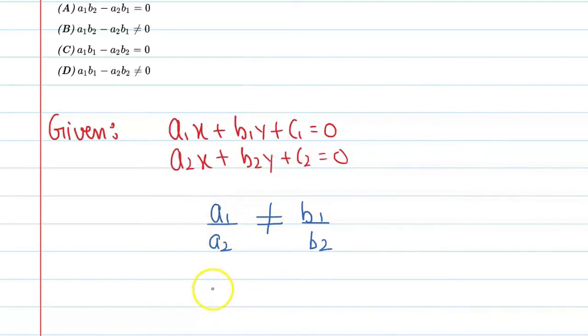then you will get a1 into b2, like this: a1 into b2 is not equal to b1 into a2. When you cross multiply, you get this condition.